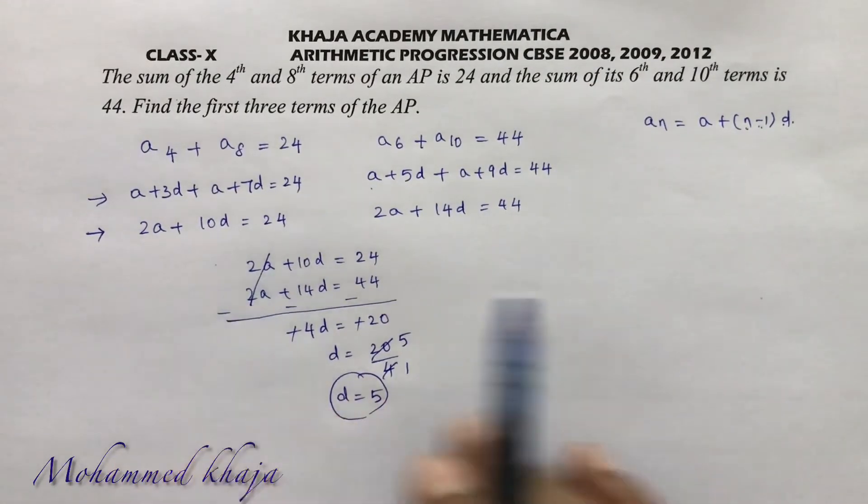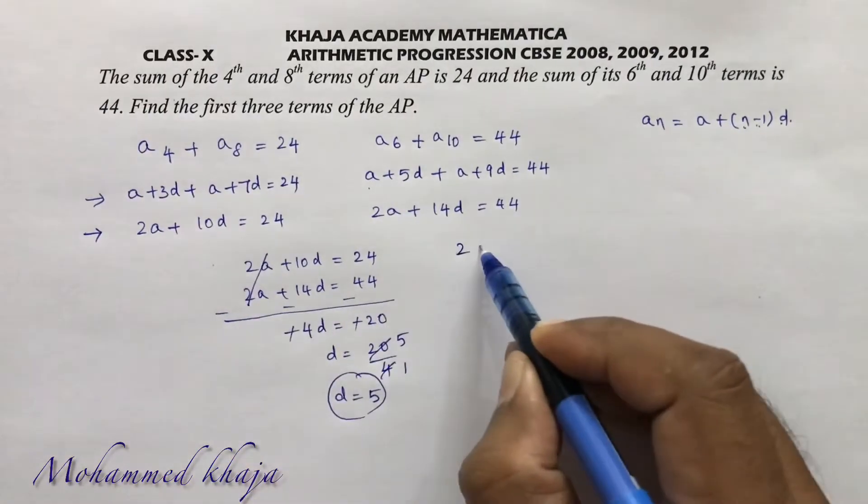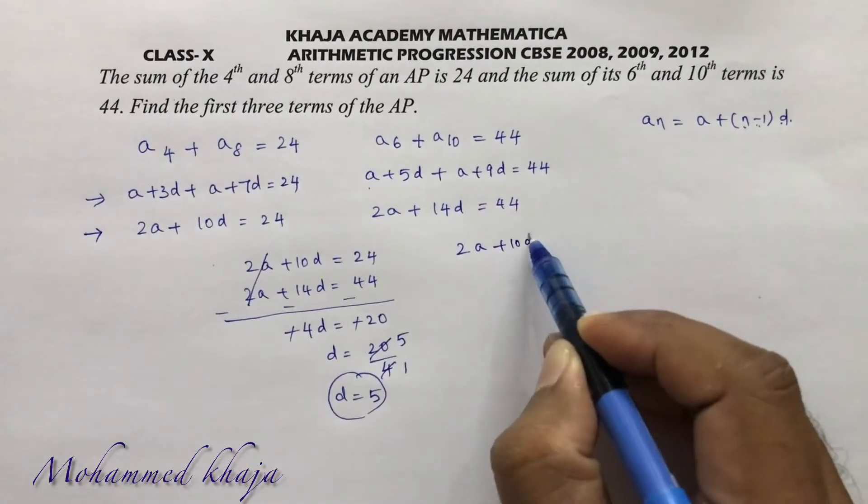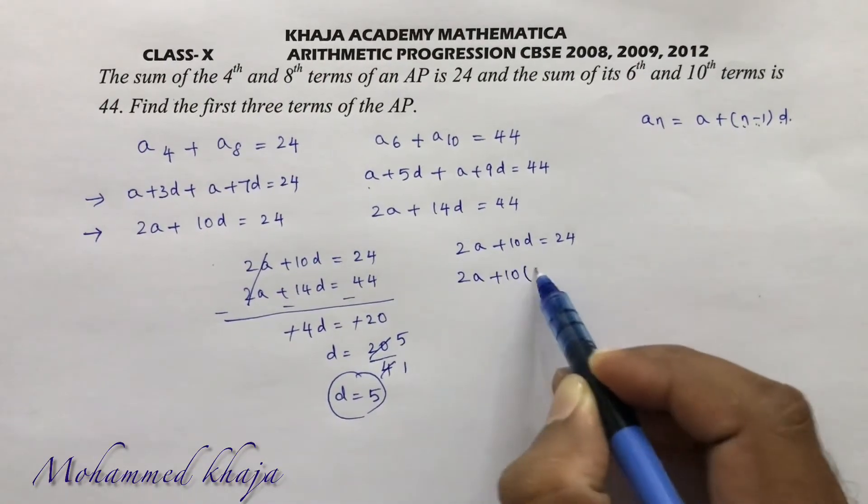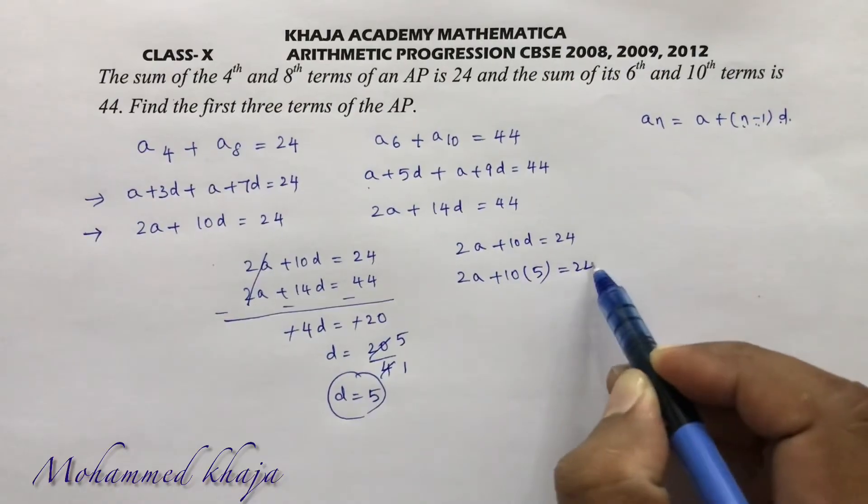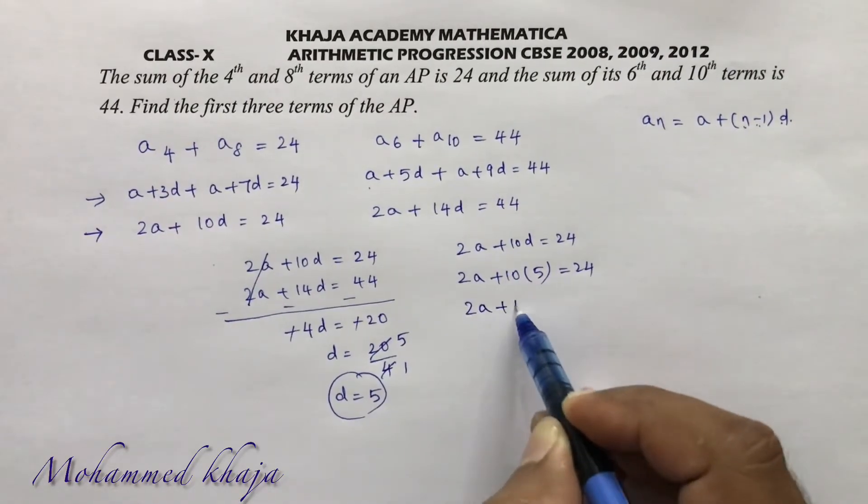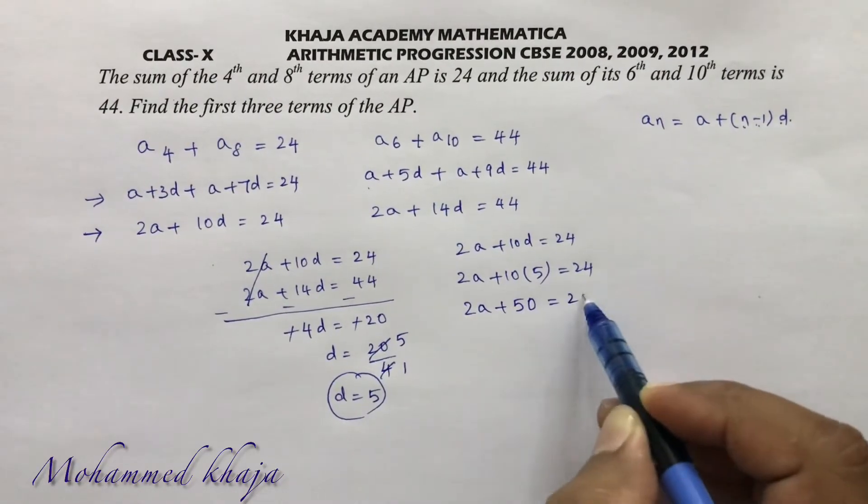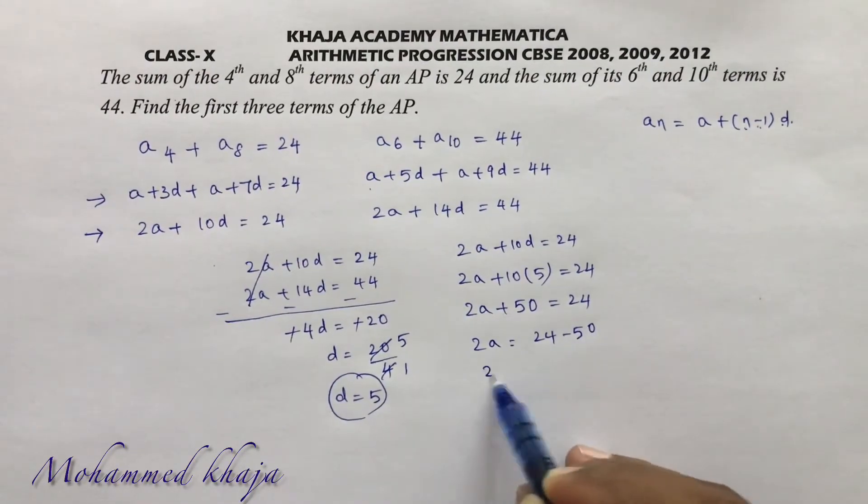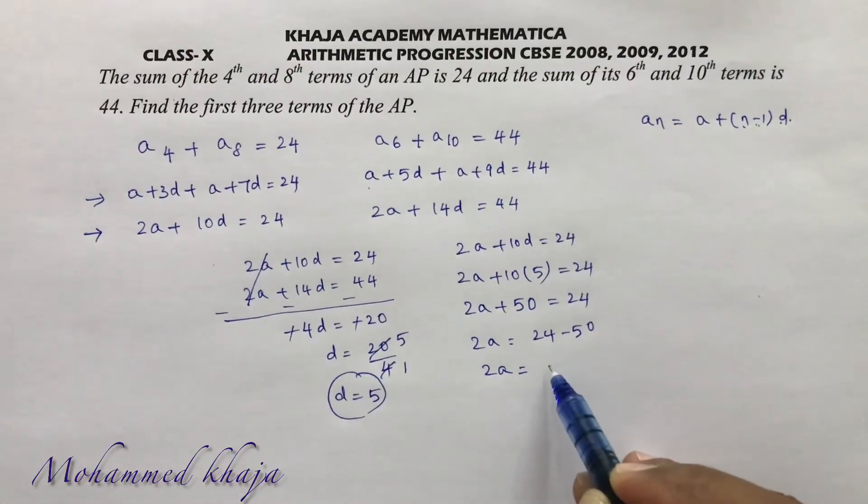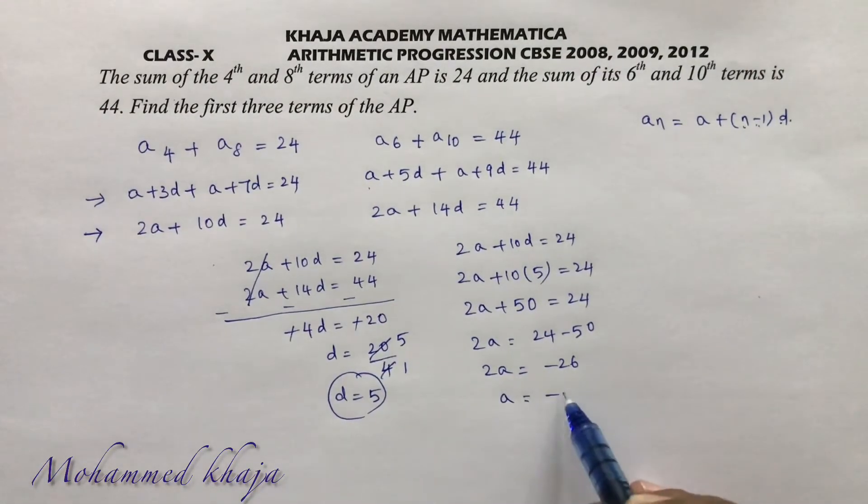Now substitute in any one of the equations to get the value of a. Take the first equation: 2a + 10d = 24. So 2a + 10(5) = 24, 2a + 50 = 24, 2a = 24 - 50, 2a = -26. So a = -26/2. The value of a is -13.